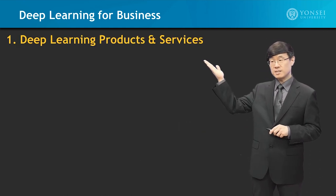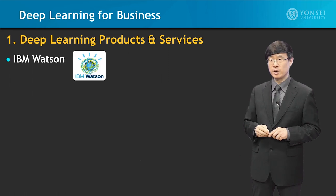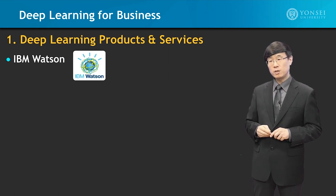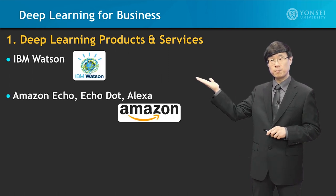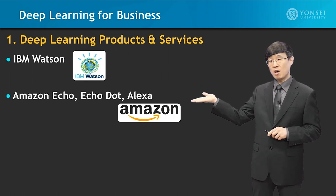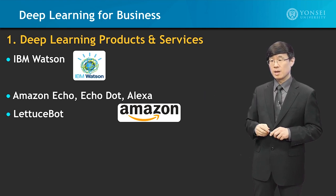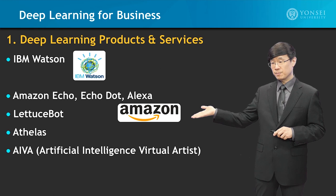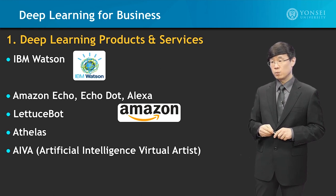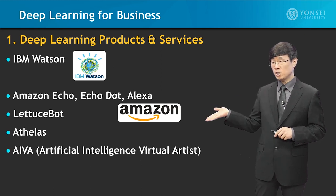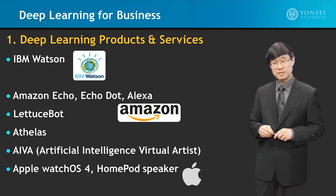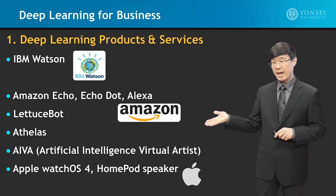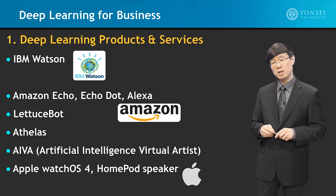Looking into products and services based on deep learning, we'll be looking into IBM Watson, Amazon Echo, Echo Dot and Alexa, Lettuce Bot, Athelas, Iva — which is an artificial intelligence virtual artist — and Apple Watch OS 4 and HomePod speaker.